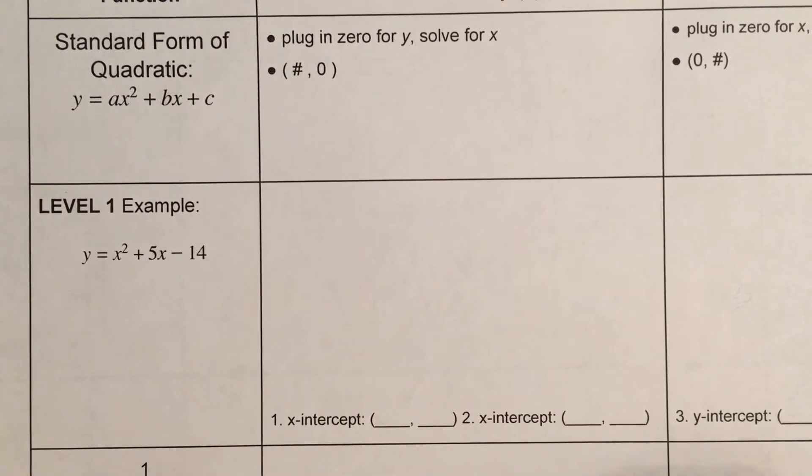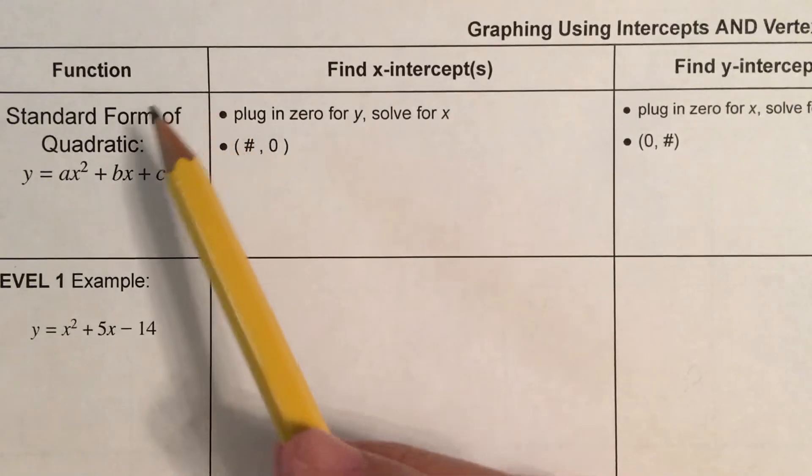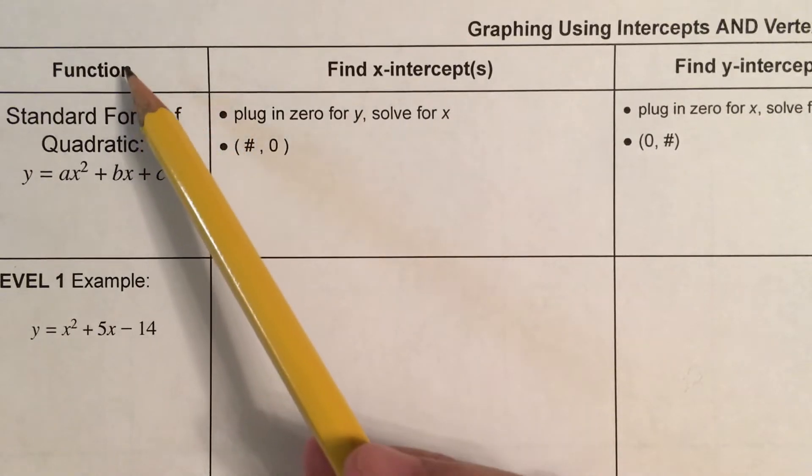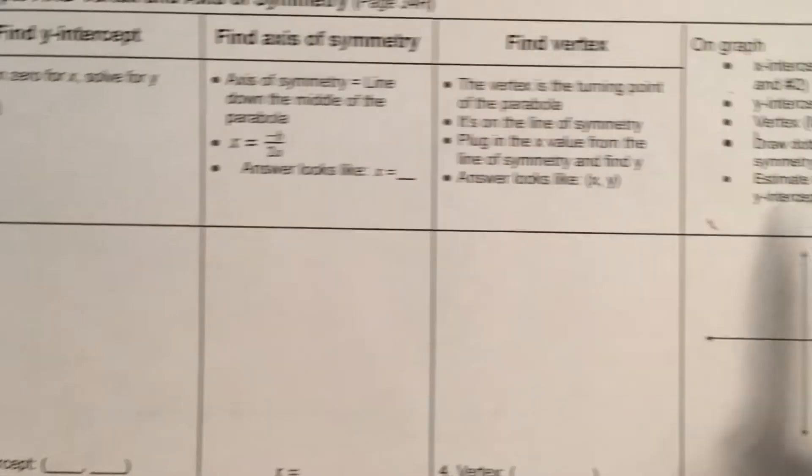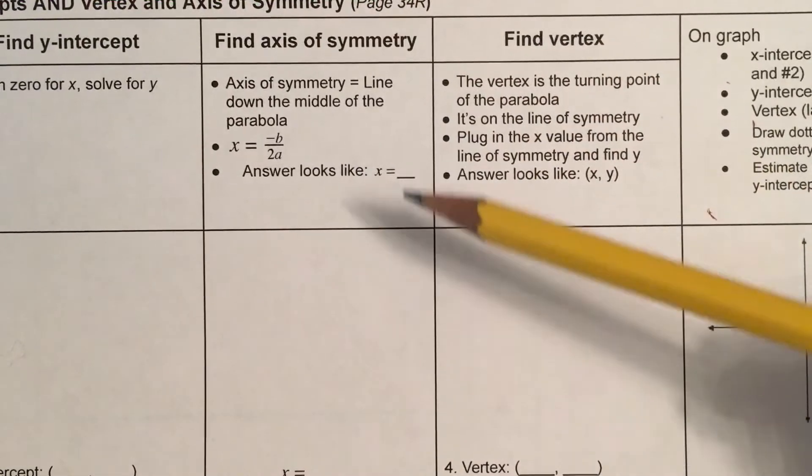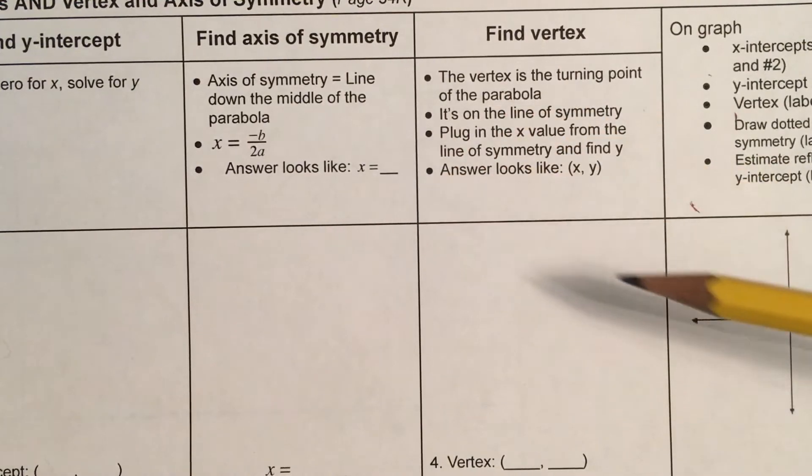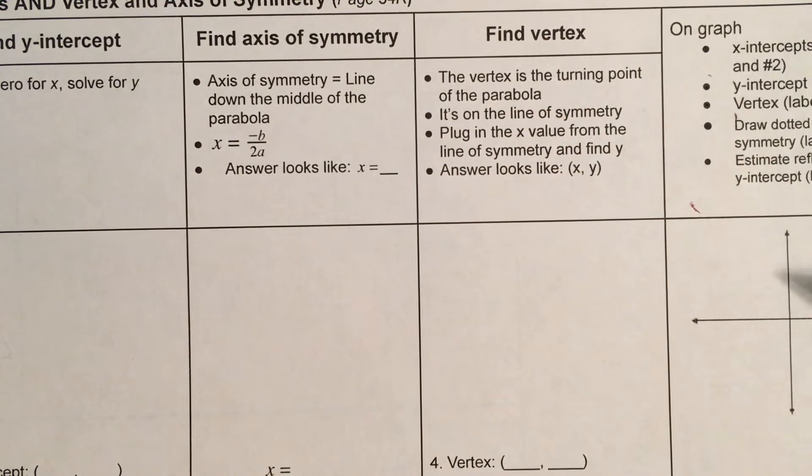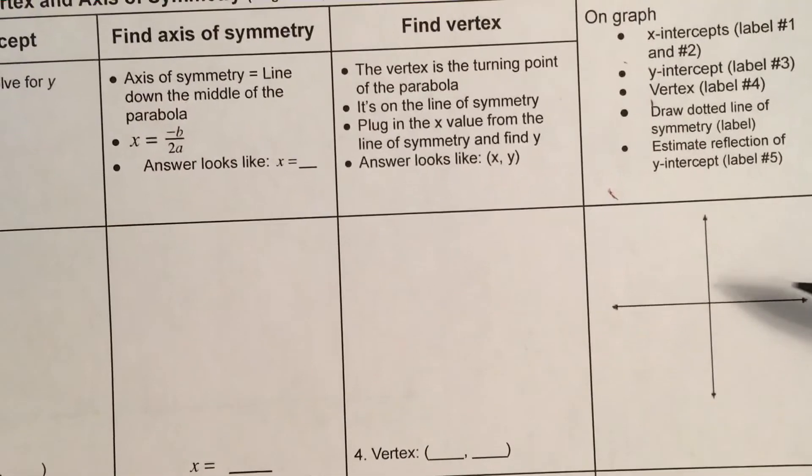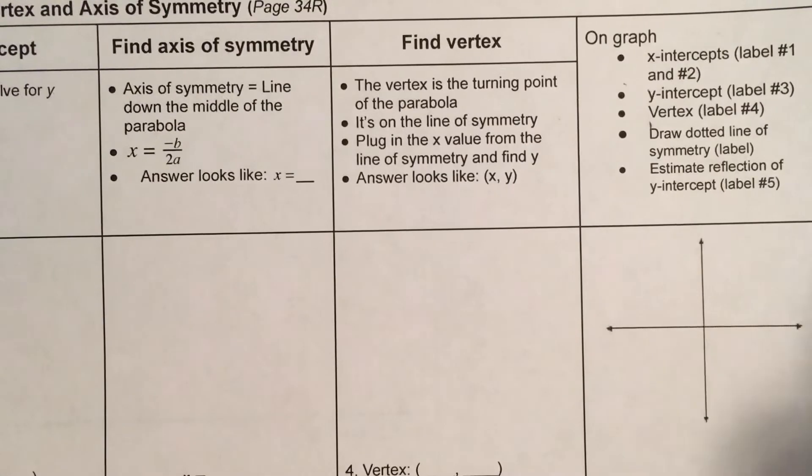In today's lesson, we're going to be building on what we've already done, and you can see that we have the same few columns as the past few days. We have function, x-intercept, y-intercept, and we have a graph column, but we've just added two things. So today, we're going to learn how to also find the axis of symmetry and find the vertex of a parabola, and that's going to help us make our graph more accurate. We've been sketching graphs, and we're just going to make our sketch a little bit more accurate today by adding a couple more things.